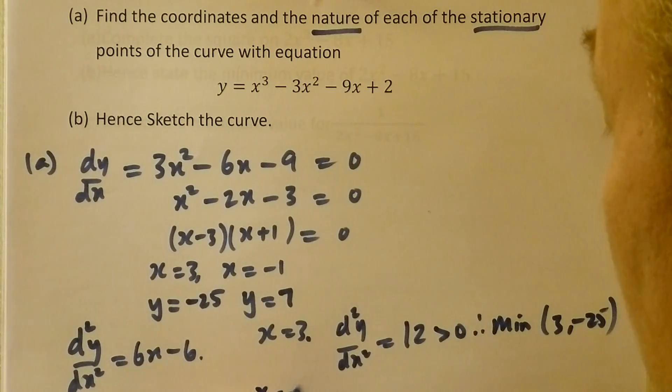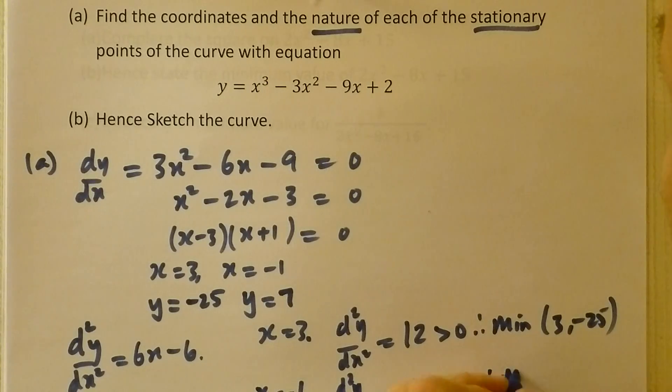Whereas if I put x equal to -1, we get -6 minus 6, we get -12, which is less than 0. Therefore, a maximum value at (-1, 7).